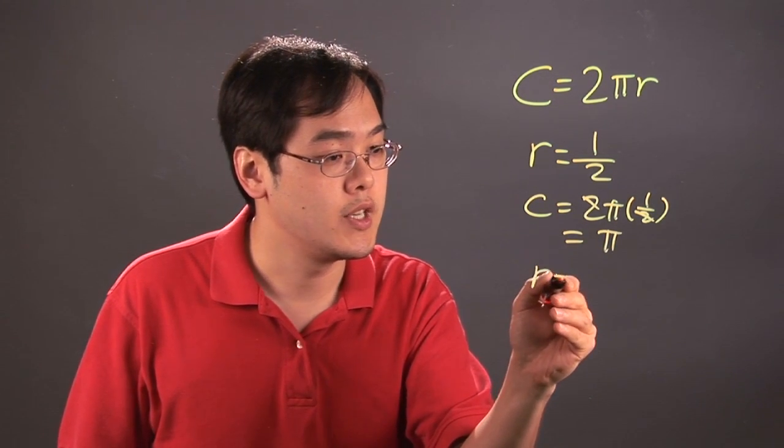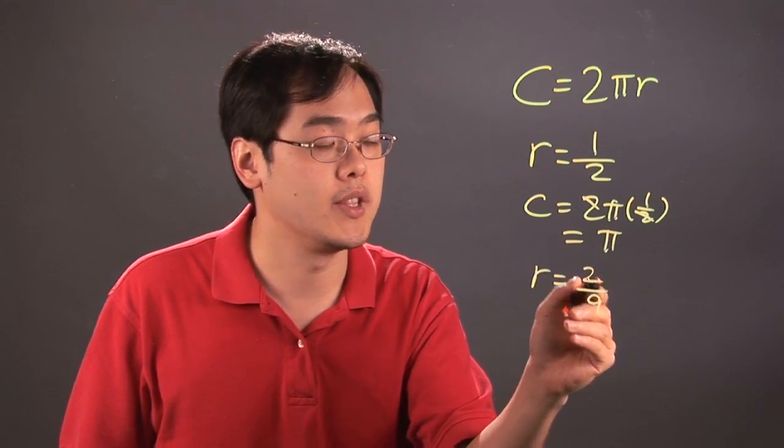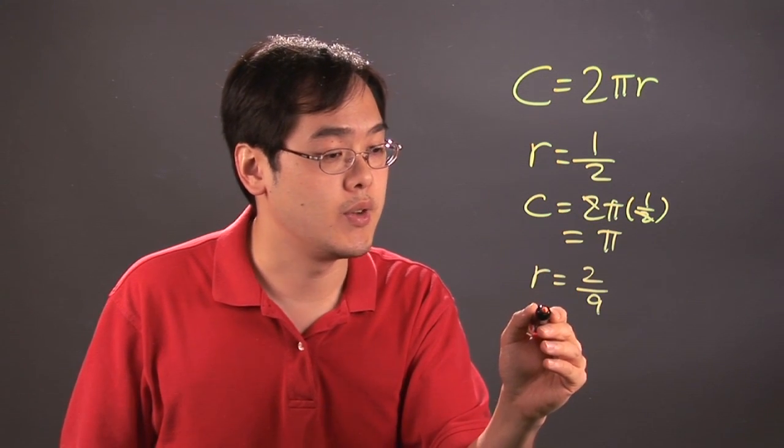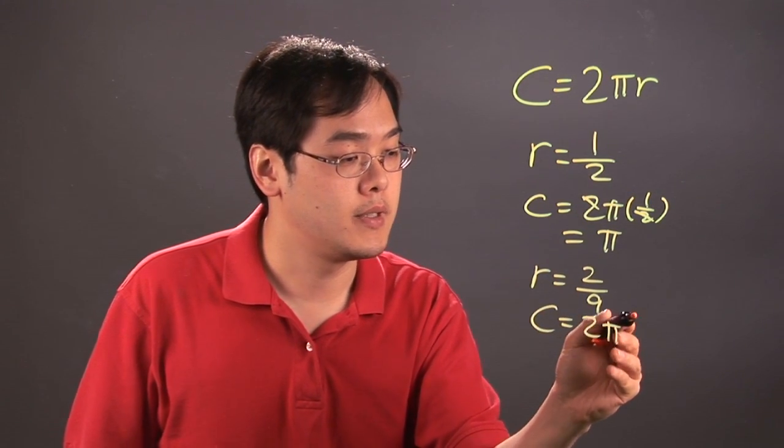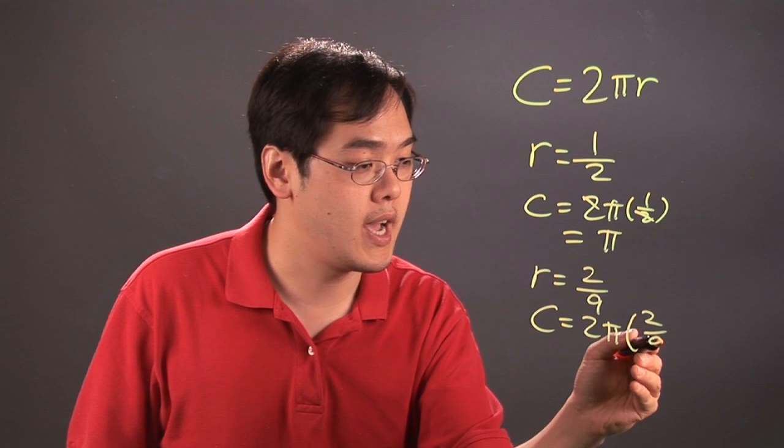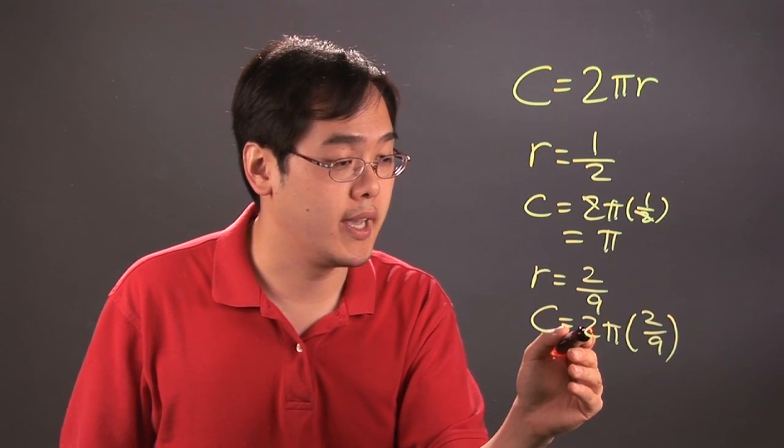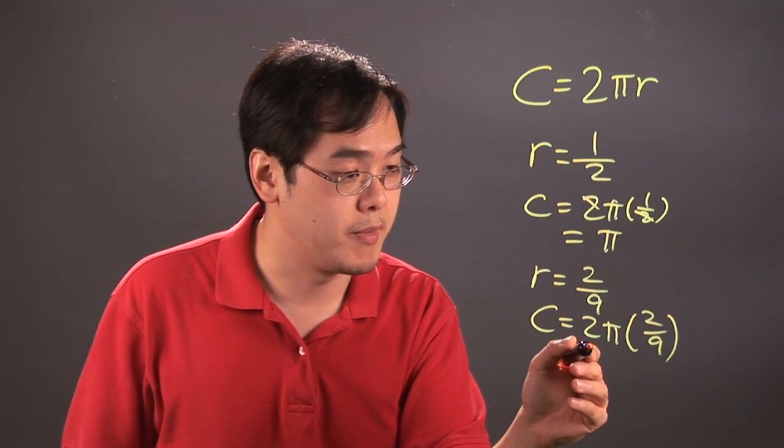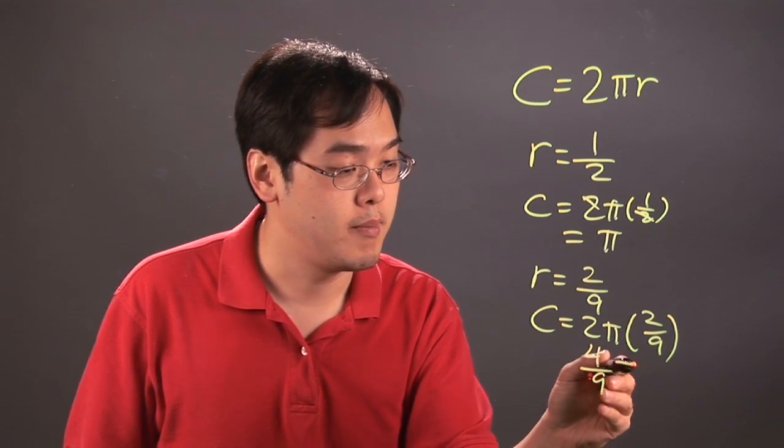Or if your radius was 2 ninths, for example, you plug in the 2 ninths where the r is, so you have circumference is equal to 2 pi times 2 over 9, and then you start multiplying. 2 times 2 ninths is going to give me 4 ninths, so it would be 4 ninths pi.